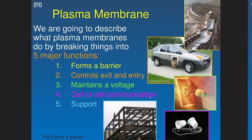The plasma membrane has five major functions: it forms a barrier — like the Great Wall of China; it controls exit and entry; it maintains a voltage, which is critical for neurons and heart function; it enables cell-to-cell communication — like cups on a string; and it provides support, through the cytoskeleton, like girders in a building.